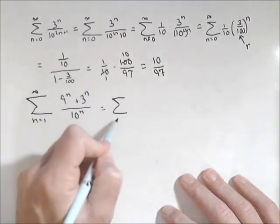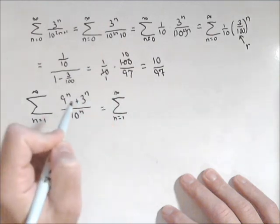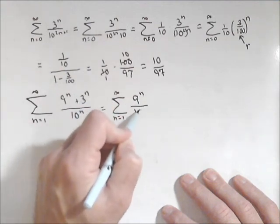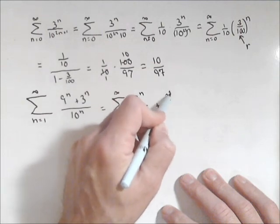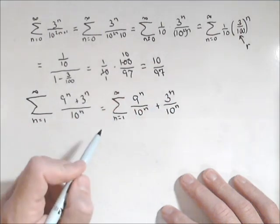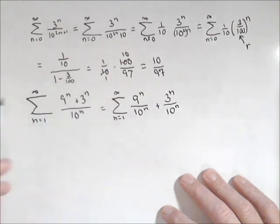We can look at this as the summation from n equals 1 to infinity of 9 to the n over 10 to the n, plus 3 to the n over 10 to the n. So we have two exponentials, these are each exponential. And by properties of summations we can actually split this into two summations.